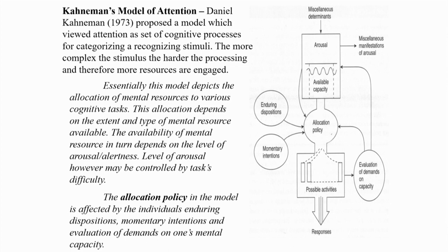One view which defines attentional capacity is that of theorists who look at attention as a spotlight. A group of theorists believe attention is like a spotlight on a stage, with the center of the stage being the focus of attention. They believe spotlights have fuzzy boundaries, meaning part of messages towards the boundary of the spotlight also gets processed.